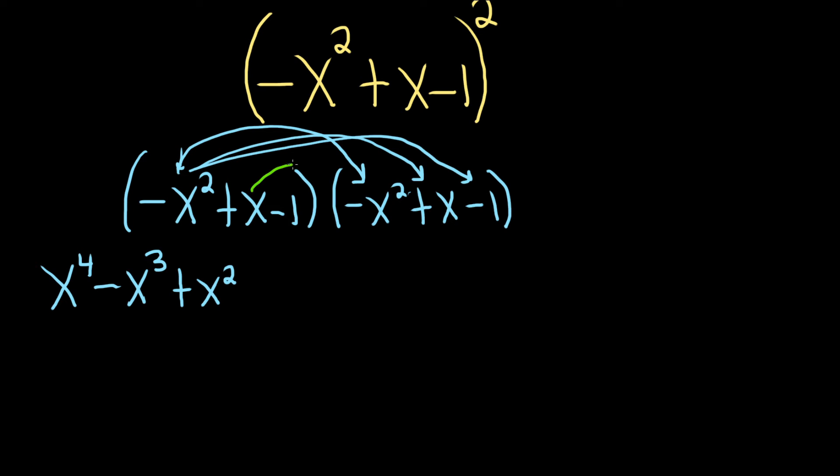Now we'll go to the x. X times negative x squared is going to give us negative x cubed. x times x is going to give us positive x squared. And then lastly, x times negative 1 is going to give us minus x. Good stuff.